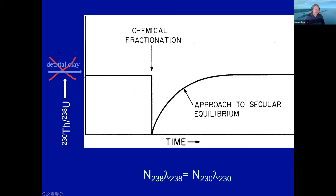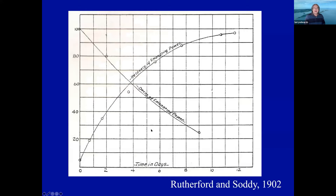If you have a whiff of detrital clay when this calcite first forms, then you're up off zero in the initial Th-230 ratio, and that really screws you up. If you have 1% detrital clay or so, you're starting out appearing a thousand years old. You really need to get rid of this stuff. There are ways of correcting, but they aren't that precise. So clays really give you a problem.